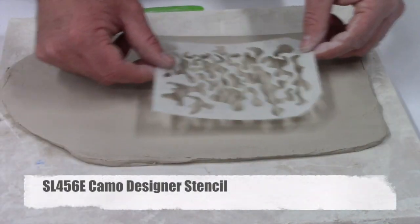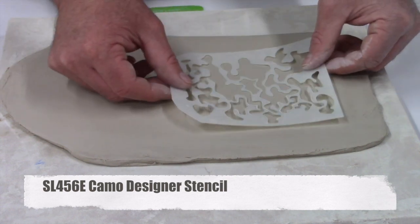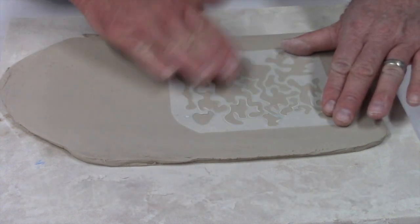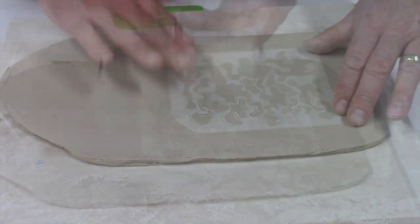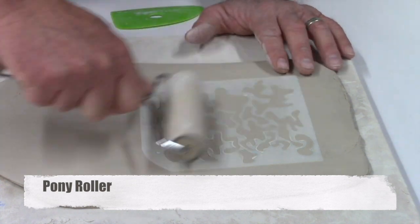We're going to let this clay sit out for about 30 minutes. We don't want it really wet or the stencil is going to stick to it. We want it to be dry enough that it goes into the clay and makes an indentation but doesn't stick.